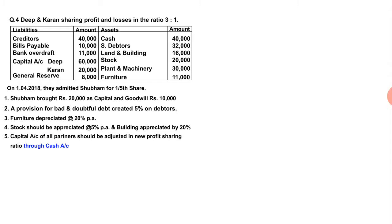The fifth adjustment states that the capital account of all partners should be adjusted in their new profit sharing ratio through the cash account. Through cash account means that when we close the partner's capital account, the balance will be adjusted with the cash account. Nothing is given about goodwill — the simple problem is that you have 20,000 capital and goodwill has 10,000. This is a simple and basic problem.